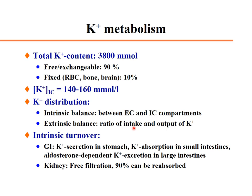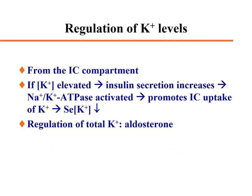Potassium distribution reflects the intrinsic balance between extracellular and intracellular compartments. In the GI tract, potassium is secreted in the stomach, absorbed in the small intestine, and aldosterone-dependent potassium excretion occurs in the large intestine. In the kidney, 90% of filtered potassium is reabsorbed, with about 10% lost in urine.